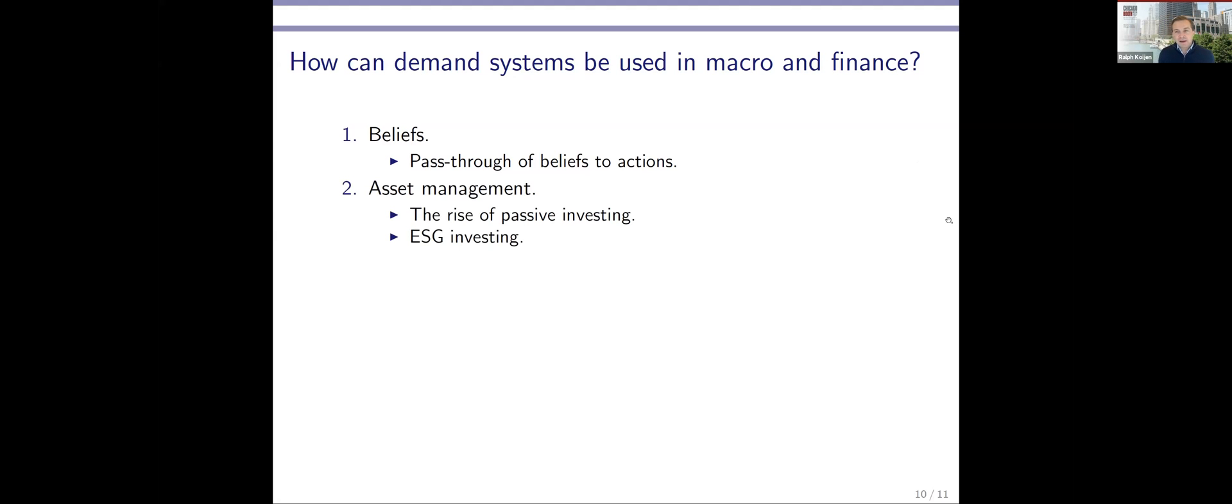The second area where demand systems could be valuable is in asset management questions related to the asset management industry. We've seen large changes in the structure there. And the second paper today is a great example of just that. We see the rise of passive investing and we want to understand what does that do to the structure of the market. Similarly, there's a lot of recent work on ESG investing, big shift in quantities, and we can explore how that impacts prices and expected returns.